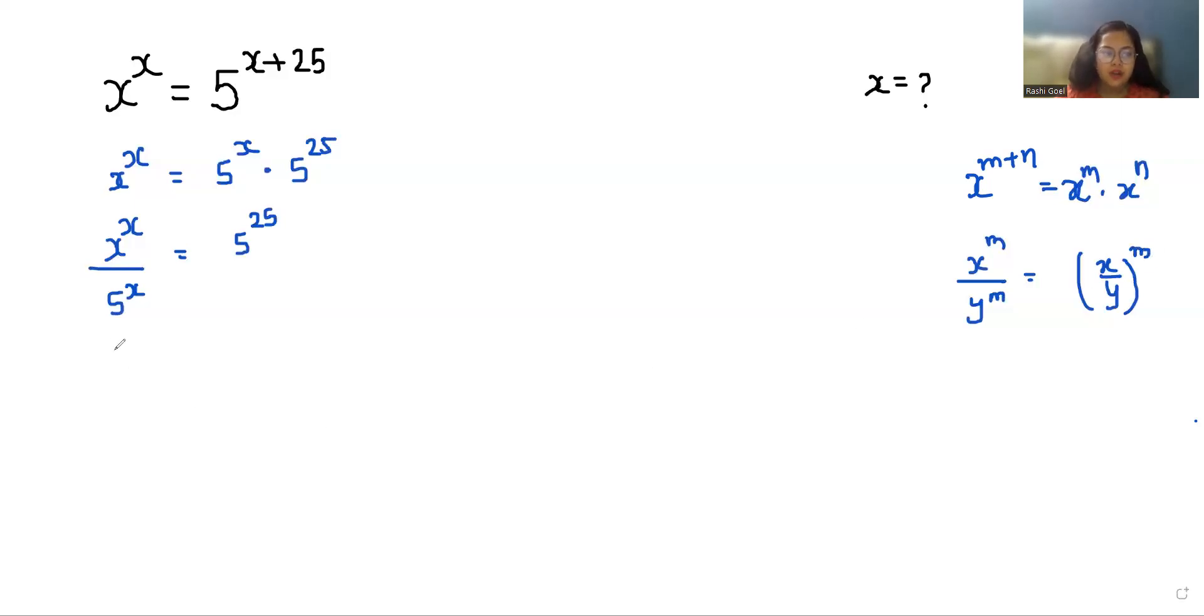So x by 5 whole power x is equals to 5 power 25. Now I'm going to divide with power 5 both sides, so x by 5 whole power x by 5 is equals to 5 power, we can cancel out 5 by 25, which gives us 5.